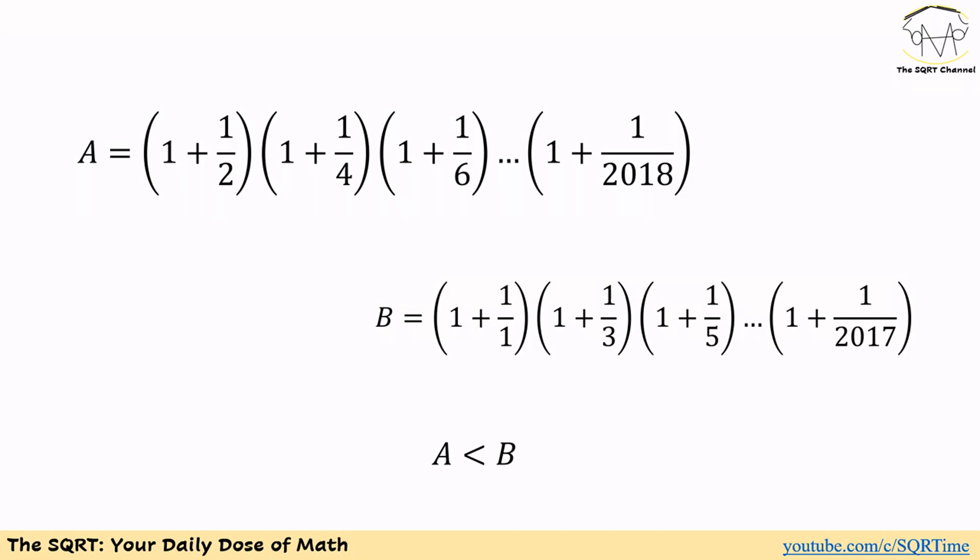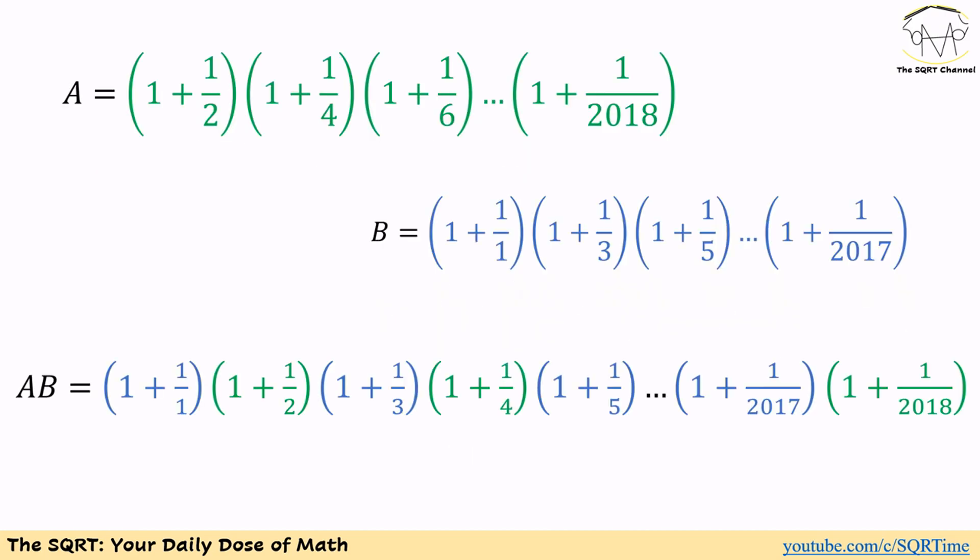We can say that 1 over 4 is less than 1 over 3. If you apply this same trick to every corresponding pair of terms, you can conclude that A is less than B.